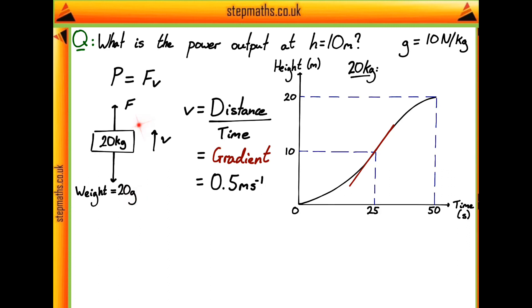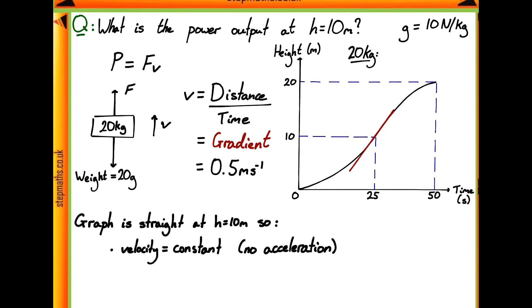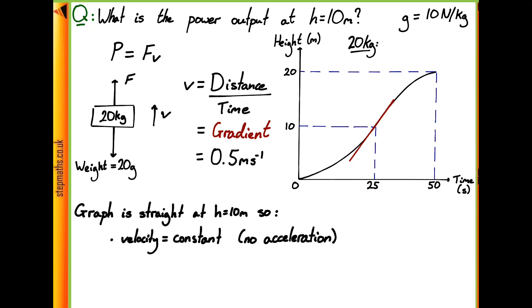From this we can try and work out what the force upwards F actually is. We can think about the fact that our graph is straight at h equals 10 meters. What that means is that the velocity is constant. On the real graph there is a portion which is quite a straight line with no curve to it at all. At a height of 10 meters, we know the velocity is constant for this period of the graph, which means there's no acceleration of our mass whatsoever.